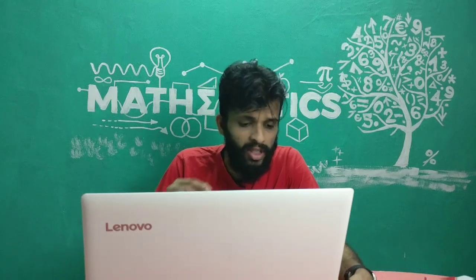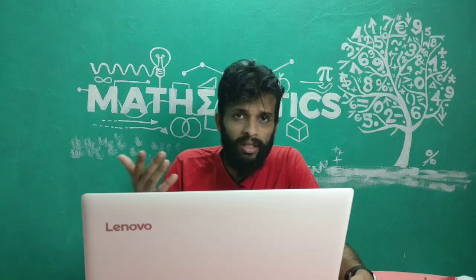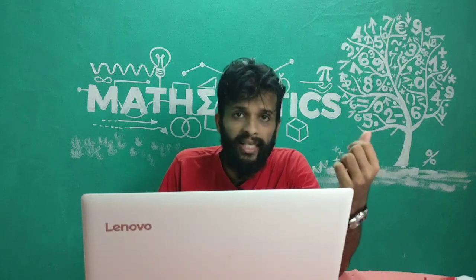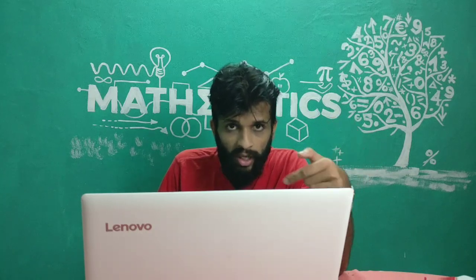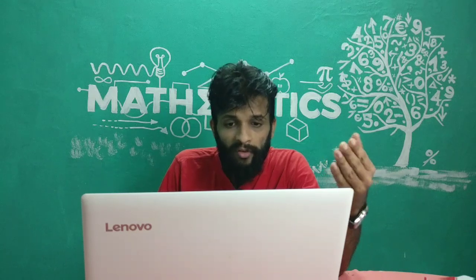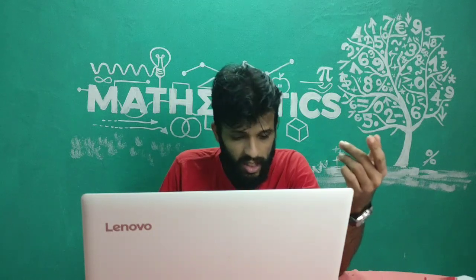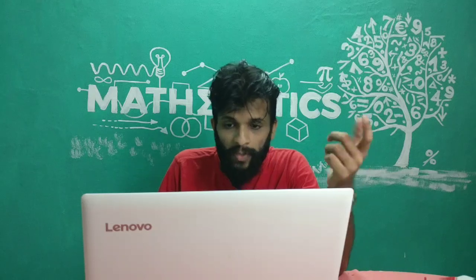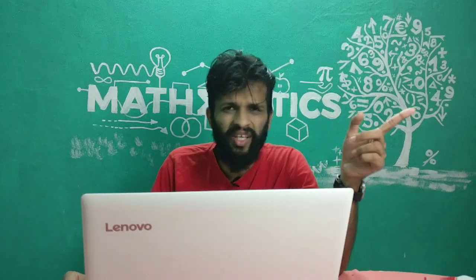The next question: the sum and product of zeros of a quadratic polynomial in x are 3 and minus 4 respectively — find the quadratic polynomial. Use the formula x² minus (sum of zeros)x plus (product of zeros), substitute the values to get x² minus 3x minus 4. The second part asks for the product of zeros of 9x² minus 29x plus 6, which is c/a = 6/9, simplifying to 2/3.